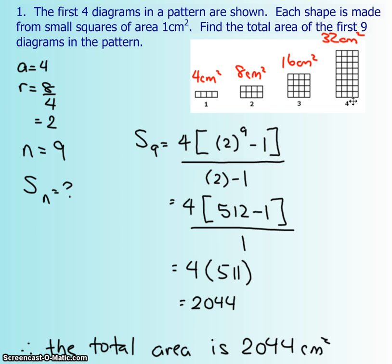Okay, so what you're going to do is just count how many squares or the total area of each of the diagrams first, and those will give you your term values. Okay, so we have four squares here. So this one's four centimeters squared, and then eight, and 16, and 32.